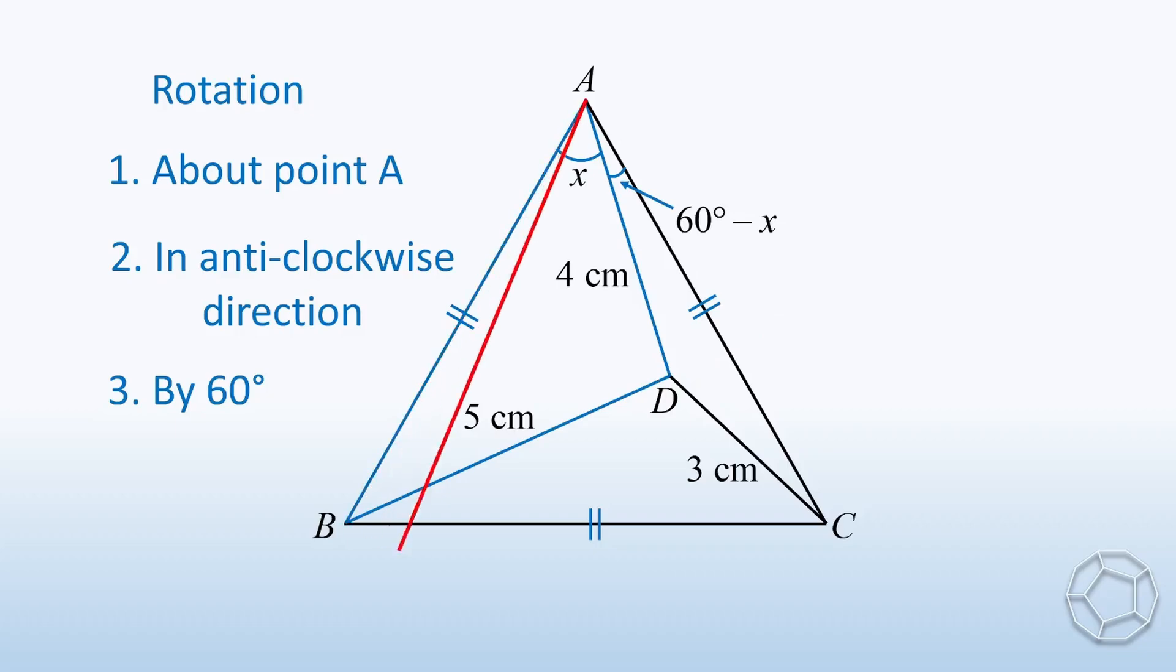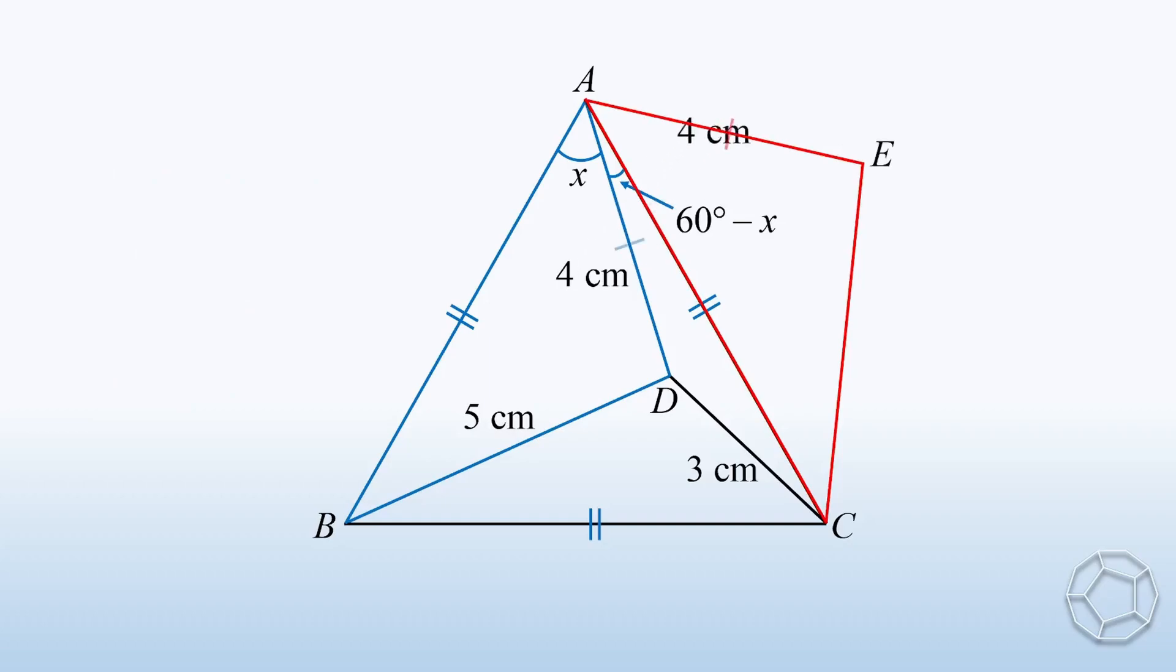Let's start with the side AB. Then it coincides with the side AC. So for the whole triangle, the image is this red triangle. Name the extra point E. Here, AE is equal to AD equals 4 cm, and EC is equal to DB equals 5 cm.